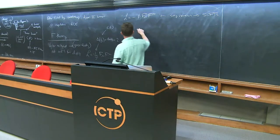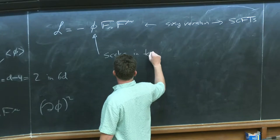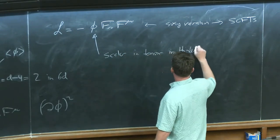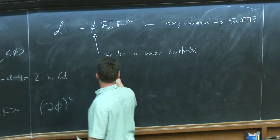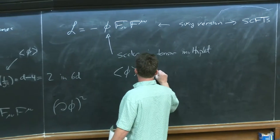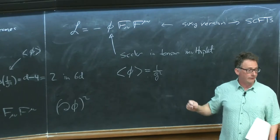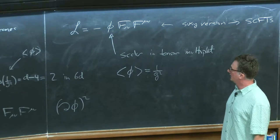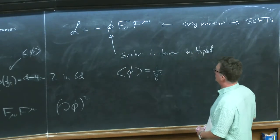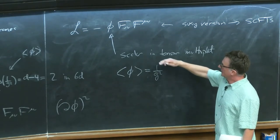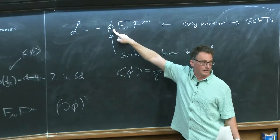In the SUSY version we can make φ the scalar in a tensor multiplet. If the tensor multiplet has a nonzero expectation value, that gives a nonzero 1/g², and we'd have an infrared-free gauge field along the tensor branch. But at the origin it's no longer just an infrared-free gauge theory because of the coupling to the tensor multiplet. This can't be done with a hypermultiplet — you need the scalar of a tensor multiplet.